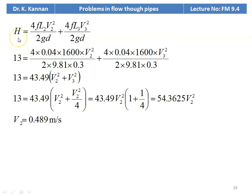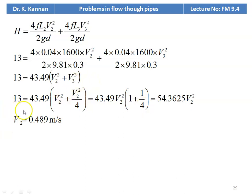Substituting: 4 × 0.04 × 1600 × V2² / (2 × 9.81 × 0.3) + 4 × 0.04 × 1600 × V3² / (2 × 9.81 × 0.3) = 13. Combining terms: 43.49 × (V2² + V3²) = 13. Substituting V3 = V2/2: 13 = 43.49 × V2² × (1 + 1/4) = 54.3625 V2². Solving, V2 = 0.489 meters per second.